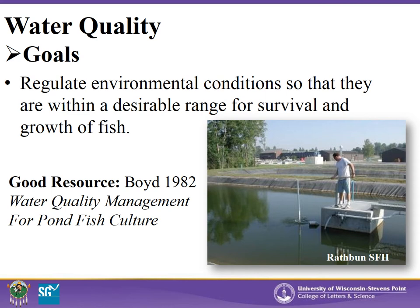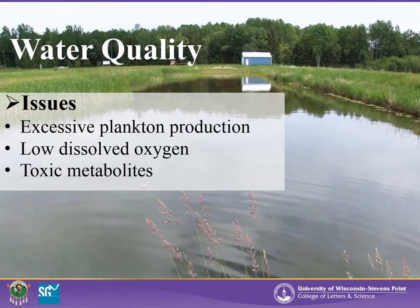Managing water quality while optimizing fish production can be tricky. Many water quality problems may occur in ponds managed for fish production, but the most important seem to be related to excessive plankton production, which leads to imbalances in dissolved oxygen budgets. Another issue is low dissolved oxygen, which leads to poor growth and fish mortalities. Lastly, a buildup of toxic metabolites such as ammonia, nitrite, and nitrate can also limit the growth, health, and survival of pond-reared fish.